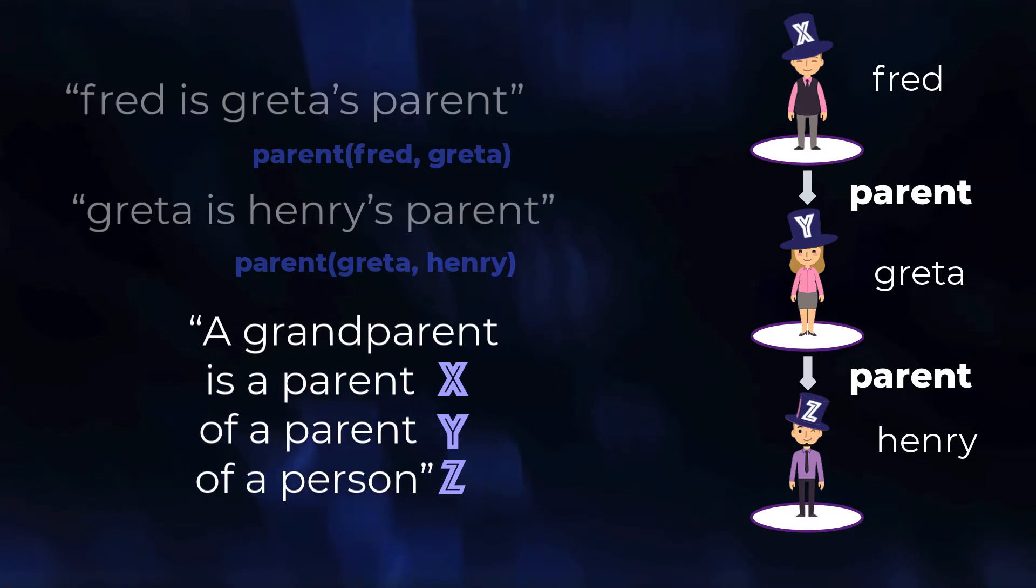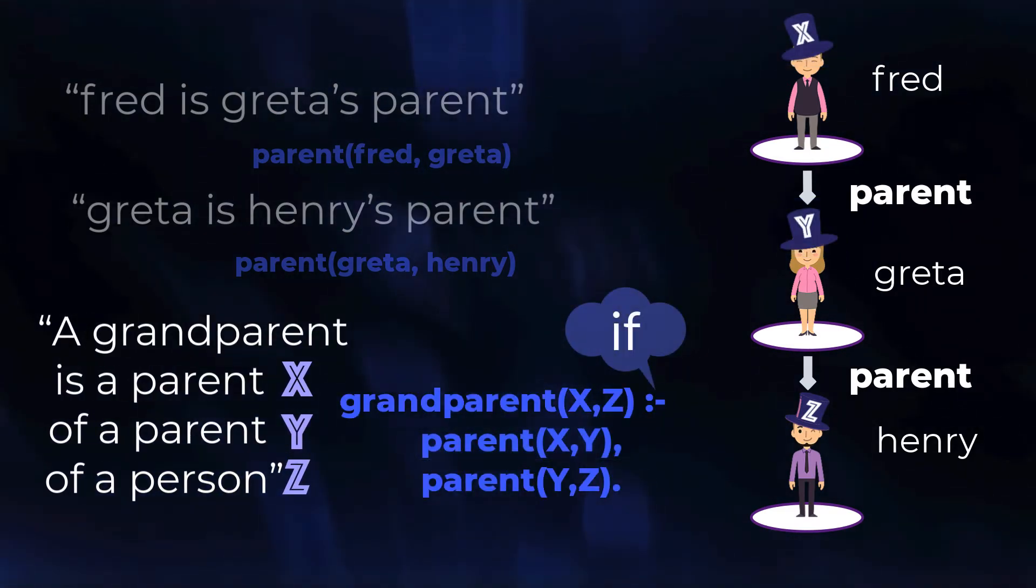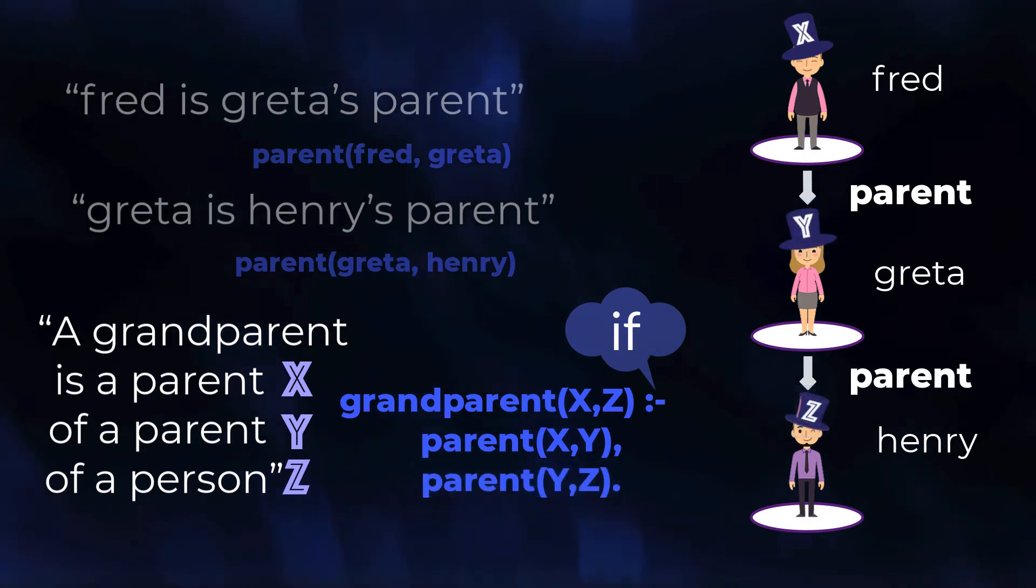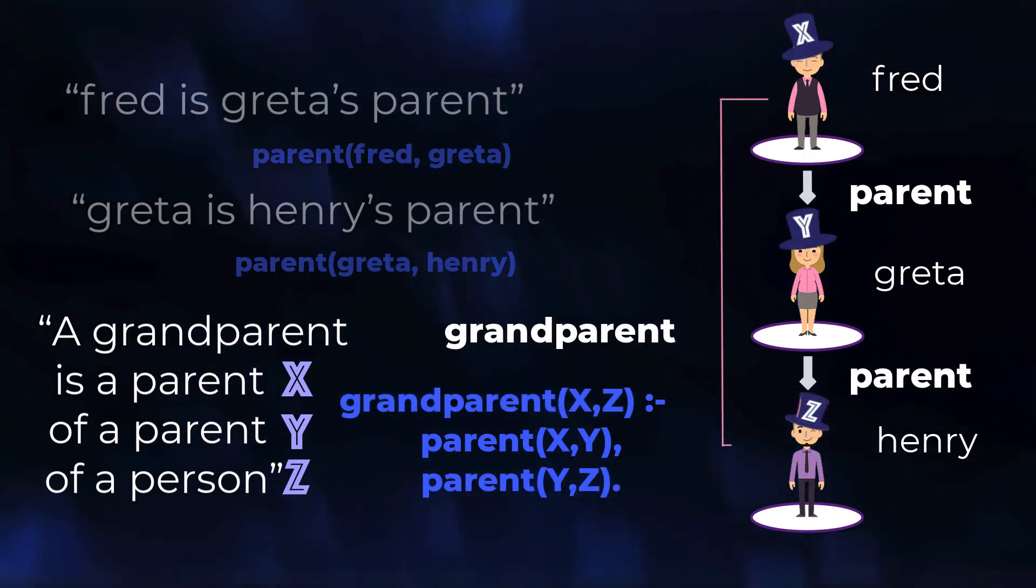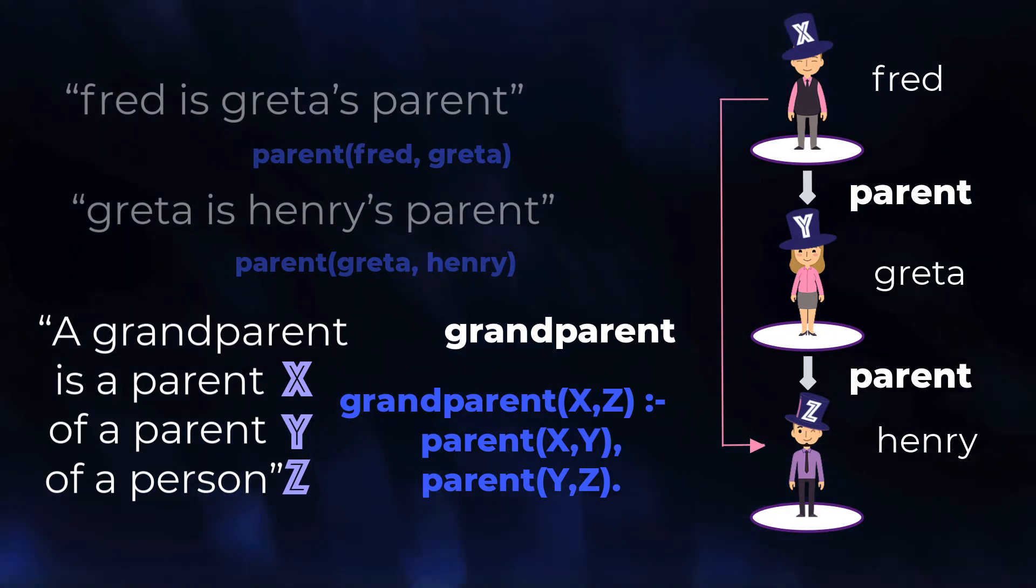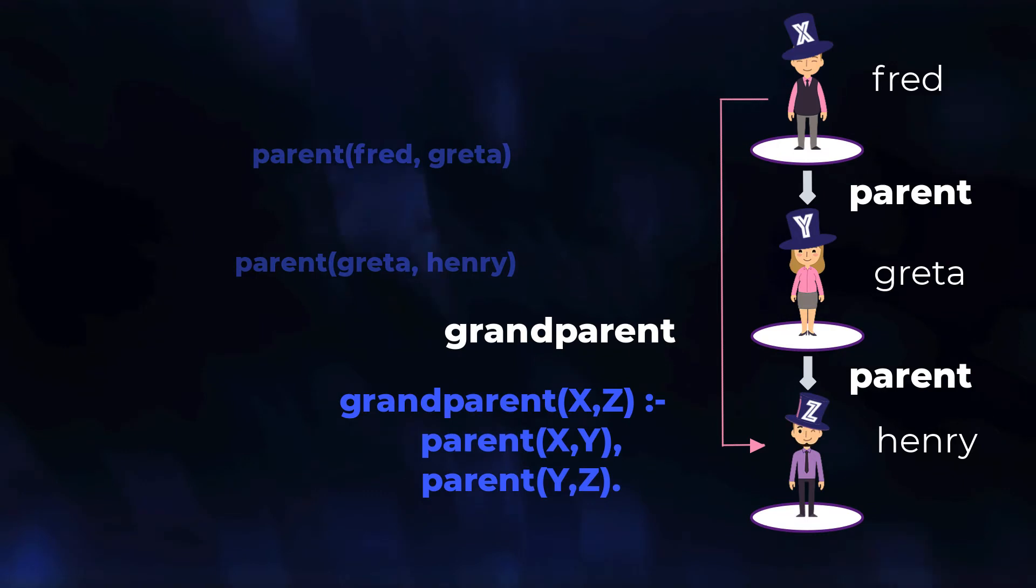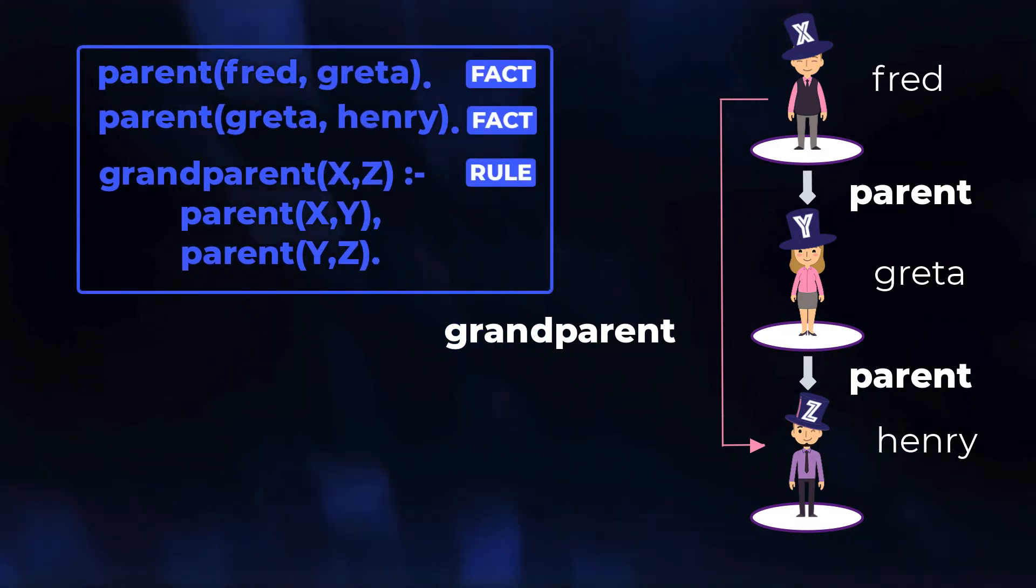In Prolog, this is a rule read as if x is the parent of y and y is the parent of z, x is the grandparent of z. A pink arrow shows that grandparent is a term defined using other terms. Let's take away the three sentences and collect the bits of prologue. Adding periods, there are two facts and one rule.